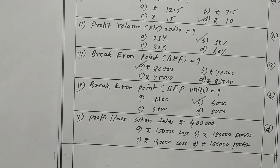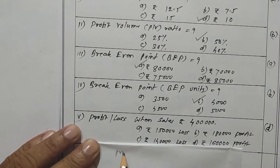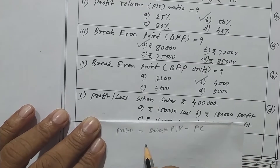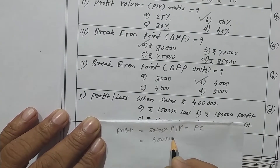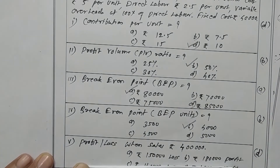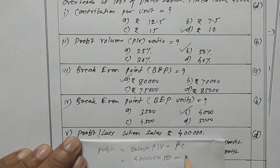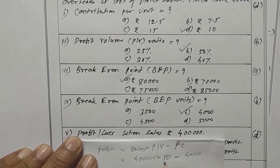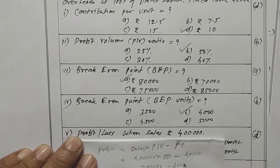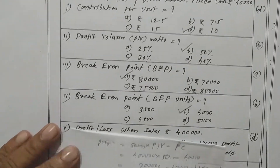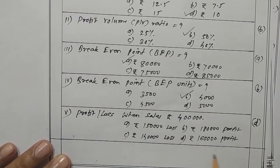Now profit or loss when sales are rupees 4 lakhs. The formula is: profit equals sales into PV ratio minus fixed cost. Sales is 4 lakhs, PV ratio is 50 percent, giving 2 lakhs, minus fixed cost of rupees 40,000 equals rupees 1 lakh 60,000 profit. Option D is correct.